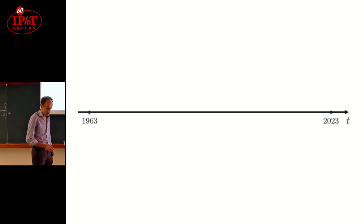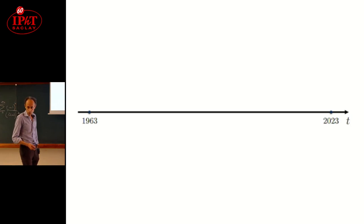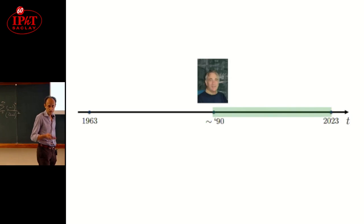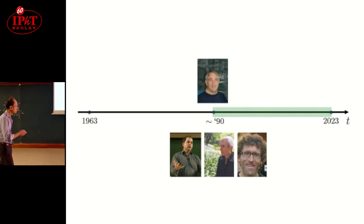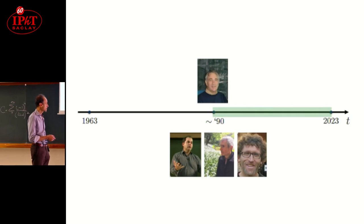Since we like timelines, I also drew a timeline starting from the beginning of IPHT to today. As we know, cosmology didn't appear at the beginning at IPHT, but rather in the middle. One of the first persons working on that was Richard Schaeffer, who moved from nuclear physics to cosmology. Then other people joined. Francis and Patrick were PhD students of Richard.